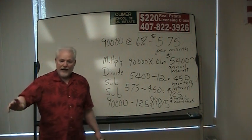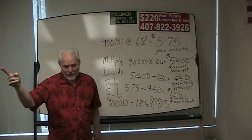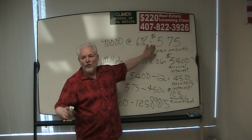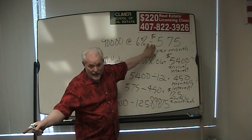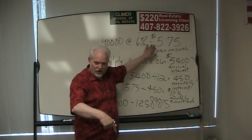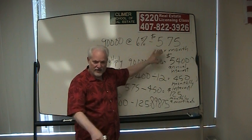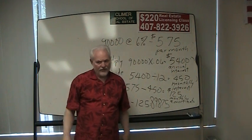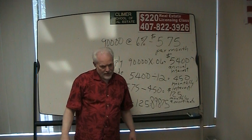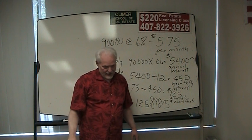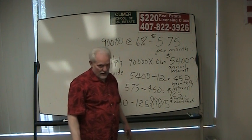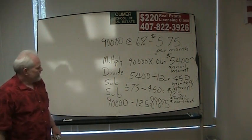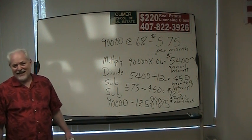When we send in our next payment, it's still going to be $575, but we owe less money — which means the principal reduction of the next payment is going to be larger and the interest is going to be smaller. Does everybody see that? 6% of $89,875, right? And that is an amortization problem.